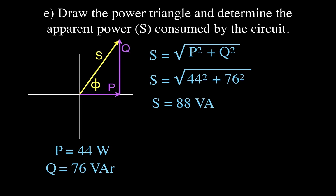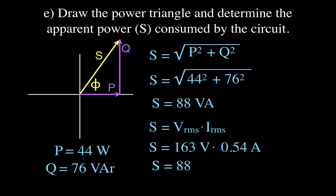We use VA — volt-amperes — as the unit for apparent power, since the inductor doesn't do real work we give it a distinct unit. You can also calculate apparent power directly as V_rms times I_rms: 163 times 0.54 gives the same answer of 88 VA, which is a good way to verify your result.